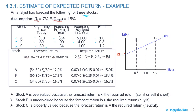For Stock C, the beginning price today is $30, expected price one year from now is $34, and expected dividend one year from now is $1, with a beta of 1.2. The expected price one year from now would be estimated using a dividend discount model, a PE model, or a combination of the two. The risk-free rate is assumed to be 7%, and the expected return to the market is 15%.